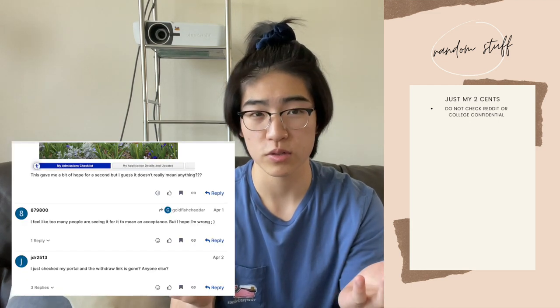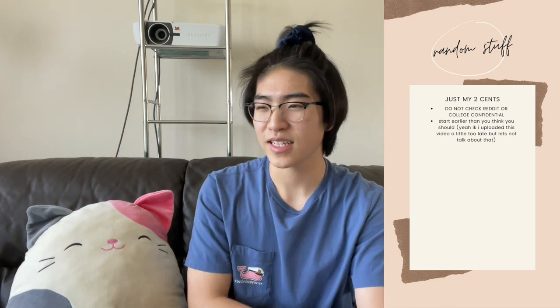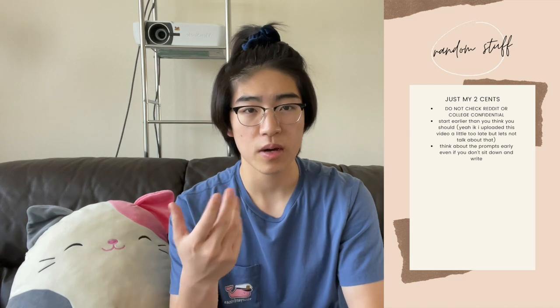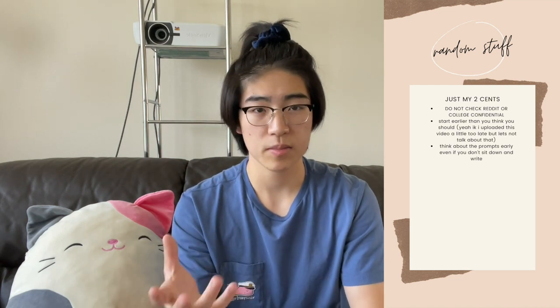This is my second to last section with some really overarching tips. First, do not check Reddit or College Confidential. There's really no point, it's just going to bring you a lot of unnecessary stress. This year there was a whole rumor on College Confidential about the color of a tulip that appeared on Duke's portal — it meant nothing, it never does. Number two: start earlier than you think you should. Look at the prompts now and think about possible things you might write about, so that when the idea hits you, you can jot it down somewhere.